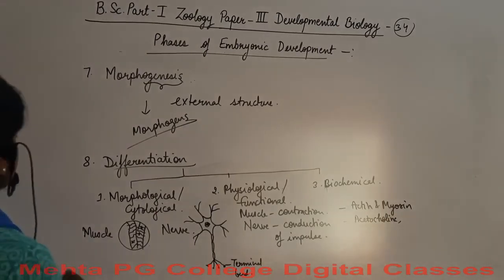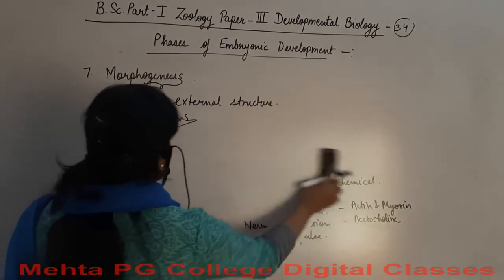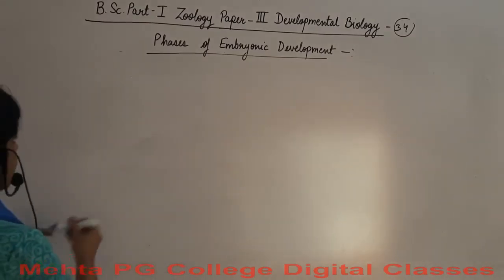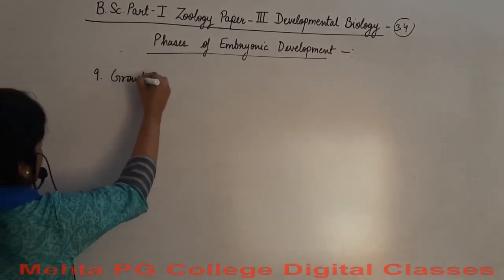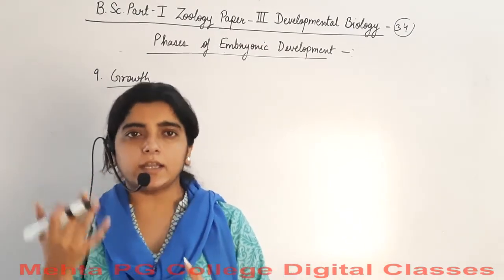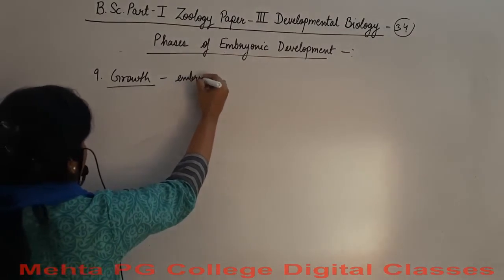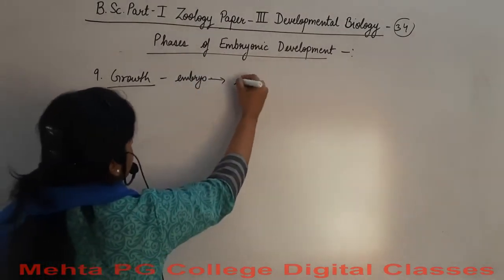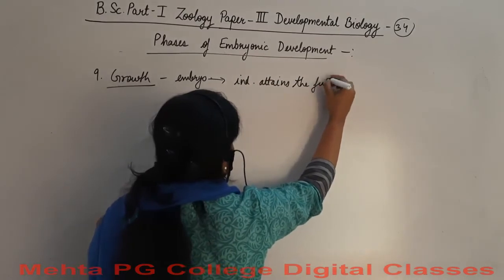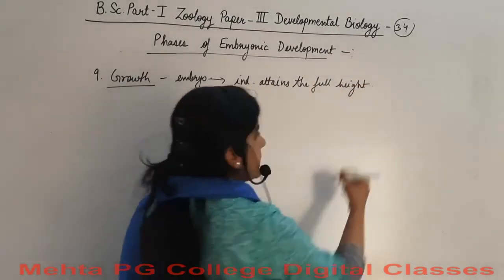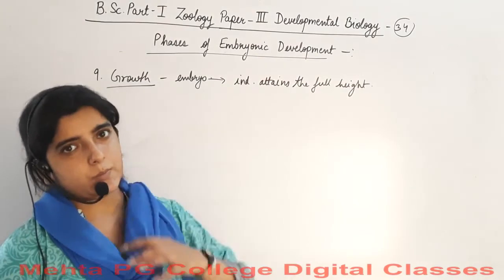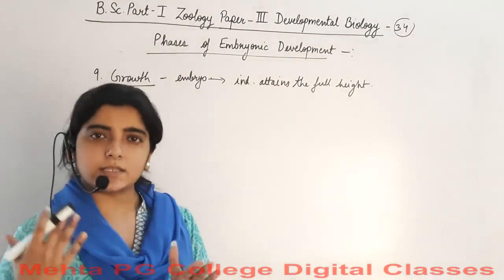The last process is growth. Growth is not just division of cells — it is also increase in height. Growth occurs from the embryo stage until the individual attains its full height. Growth is concerned not just with cells but also with the height and age of the organism.